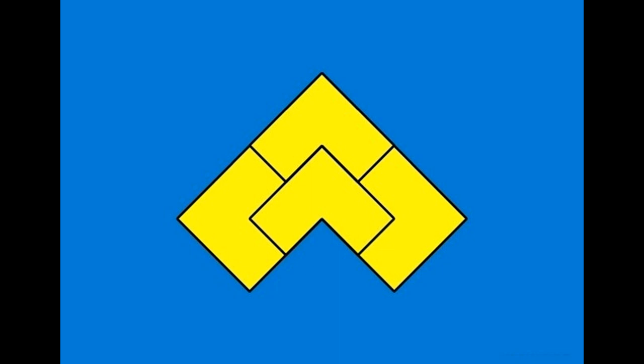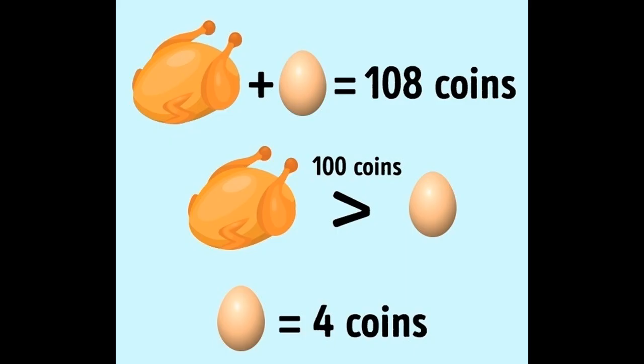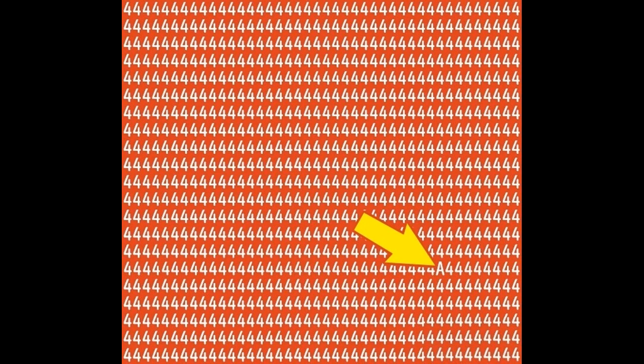Third answer: there are no dice with seven dots here — here it is in case you did not find it. Fourth answer: the egg costs four coins and the chicken 104 coins.